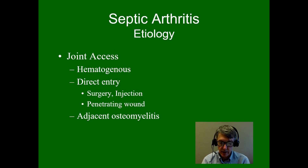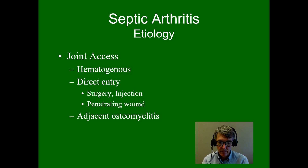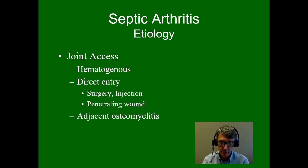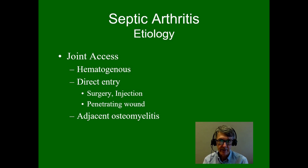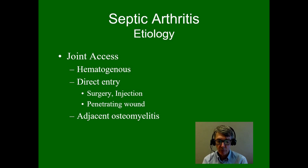What causes septic arthritis? Bacteria can enter the joint either hematogenously — that is, via the blood — or can be introduced directly, such as during surgery or joint aspiration by a physician, from adjacent osteomyelitis (infection of the bone), or from a penetrating wound.